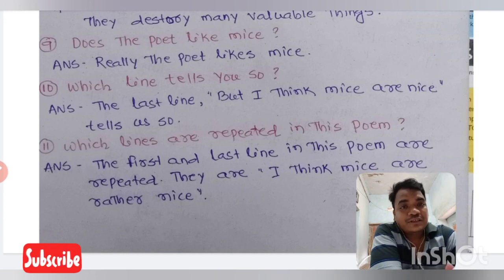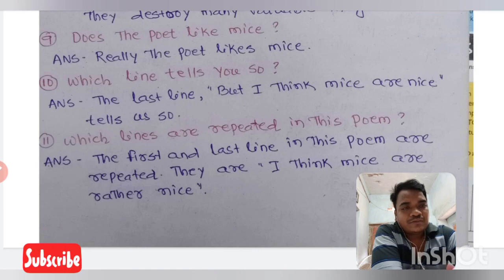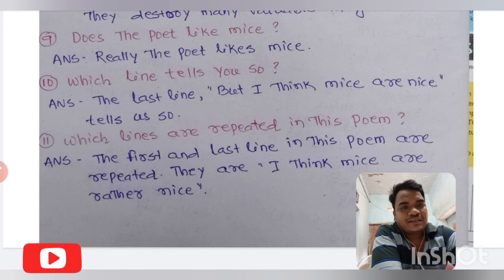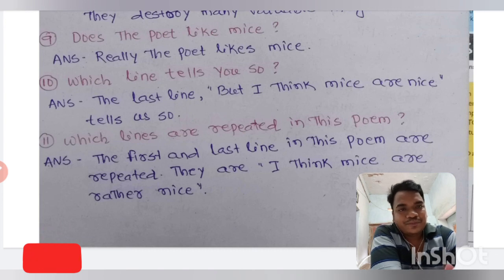Which line tells you the poet likes mice? The last line — 'I think mice are rather nice' — tells us that the poet likes mice. Which line is repeated in the poem? The first and last lines are repeated: 'I think mice are rather nice.' Dear students, this is all about part 2 lesson number 1. In our next video we will discuss another lesson. That's all for today, see you soon.